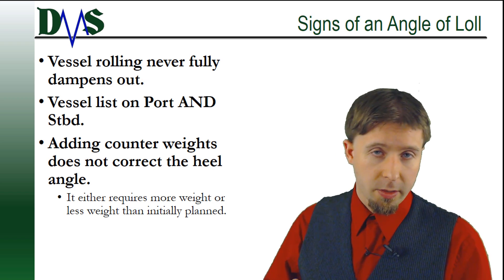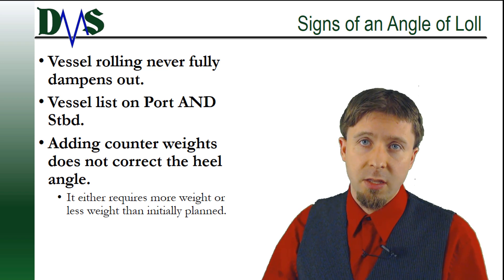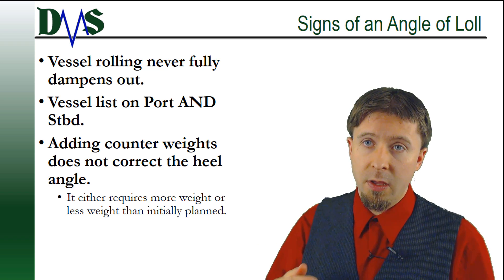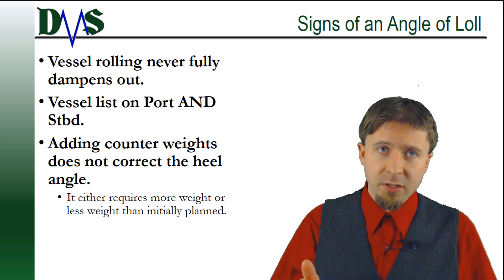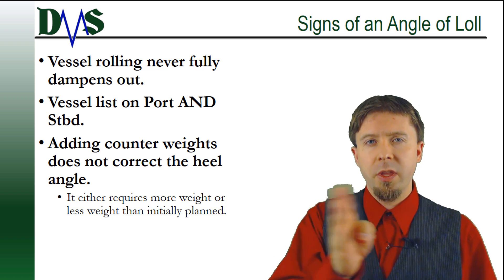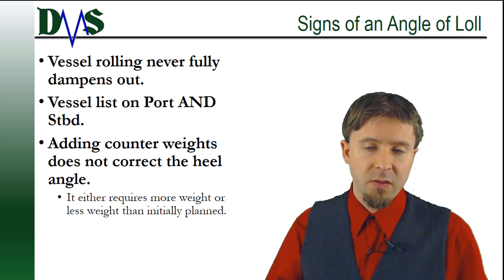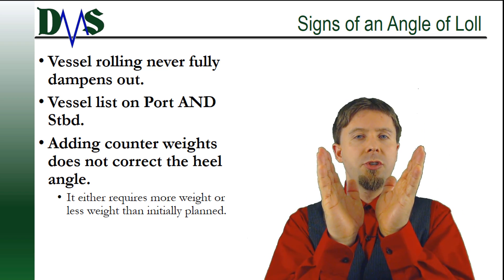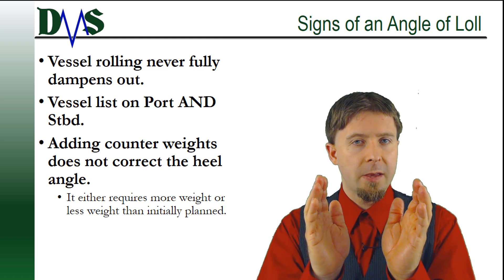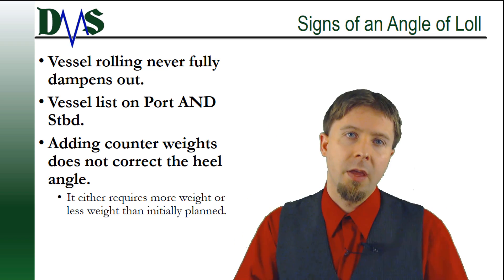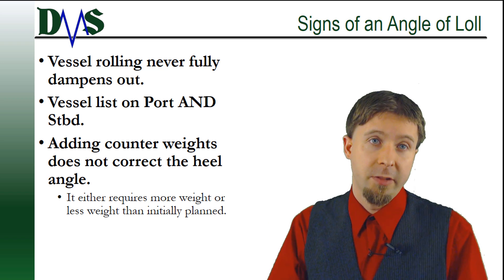I don't want everyone to think they have an angle of lull just because it sounds scary, so here are some classic signs. Number one: if you're in calm seas, your vessel is rolling about and that rolling never seems to really stop — it's always going at some minimum level, even in glass calm seas. That's because the angle of lull is an exclusion angle; the ship can never rest at zero heel, so it flip-flops on its angle of lull and seems like it's constantly rolling.